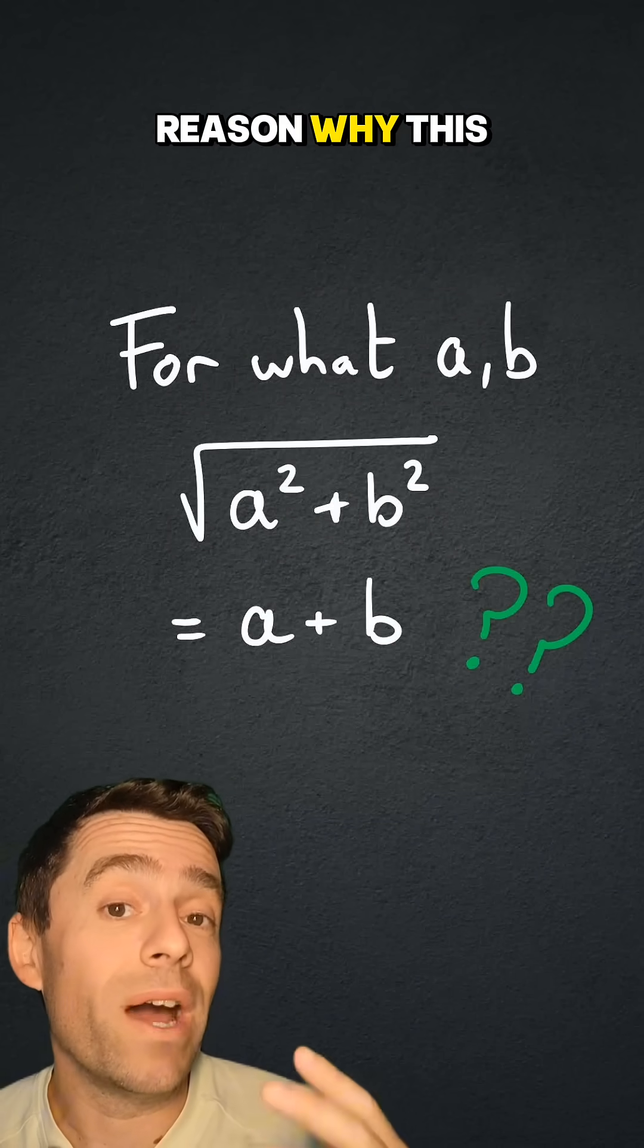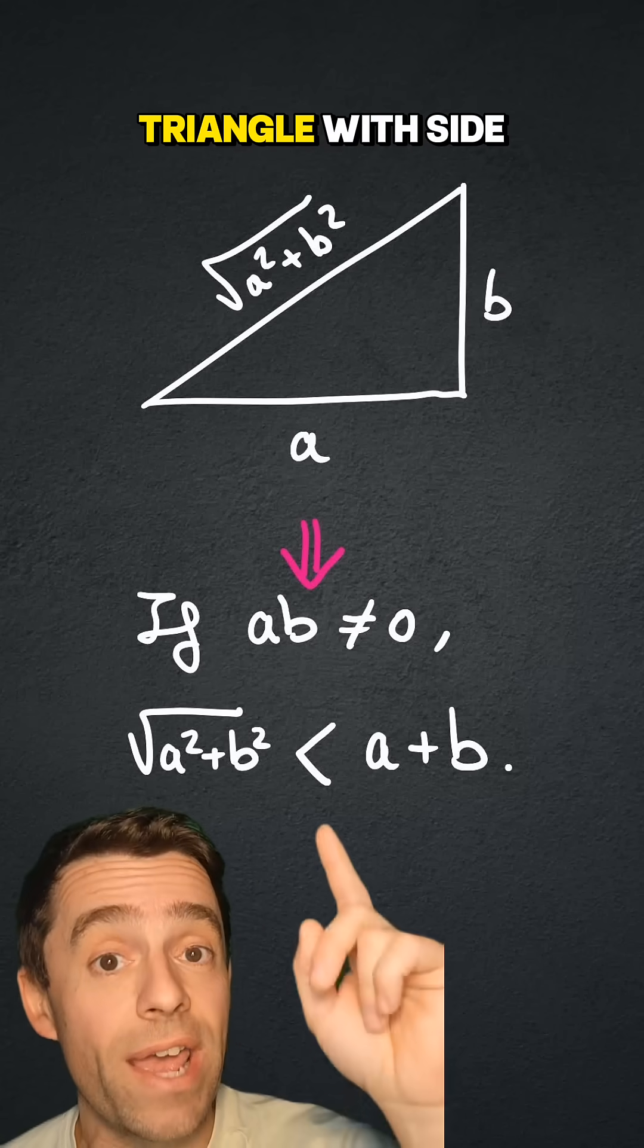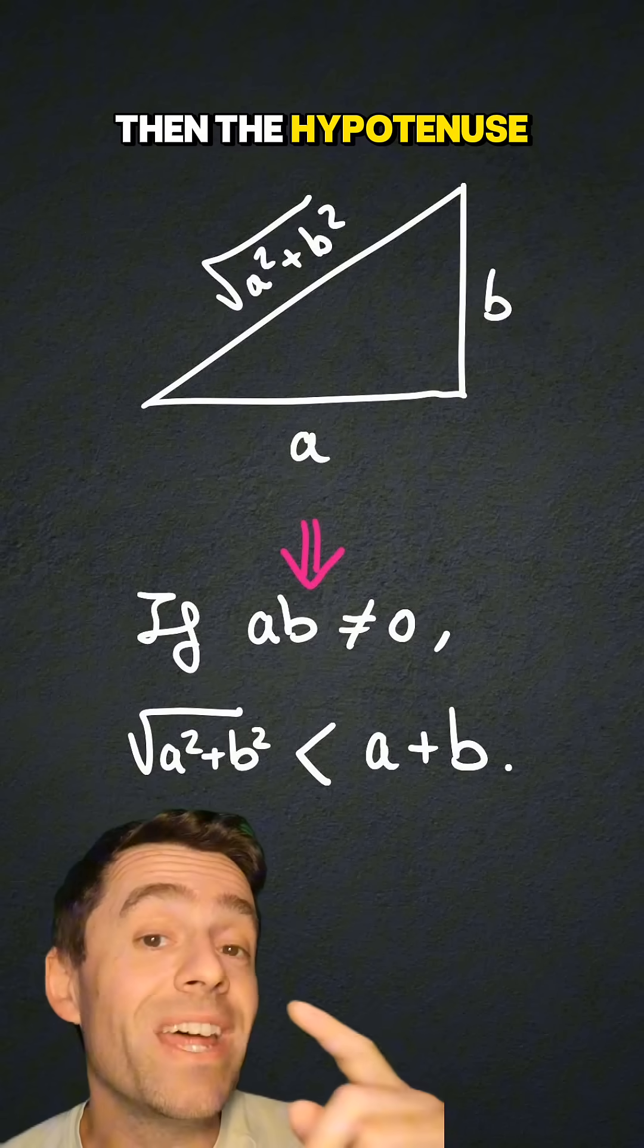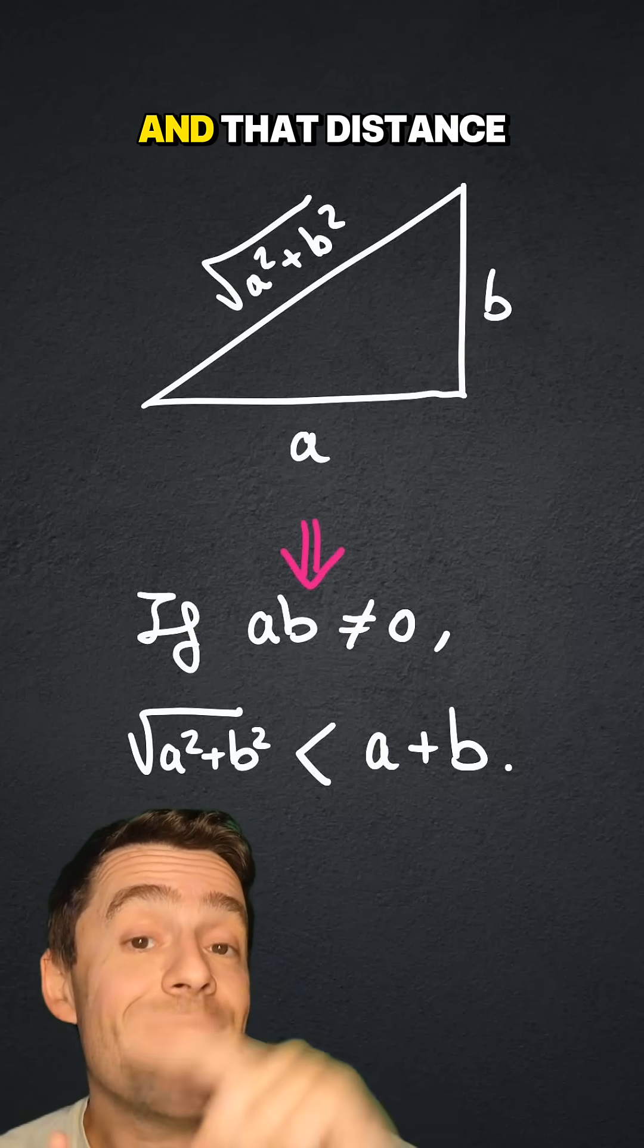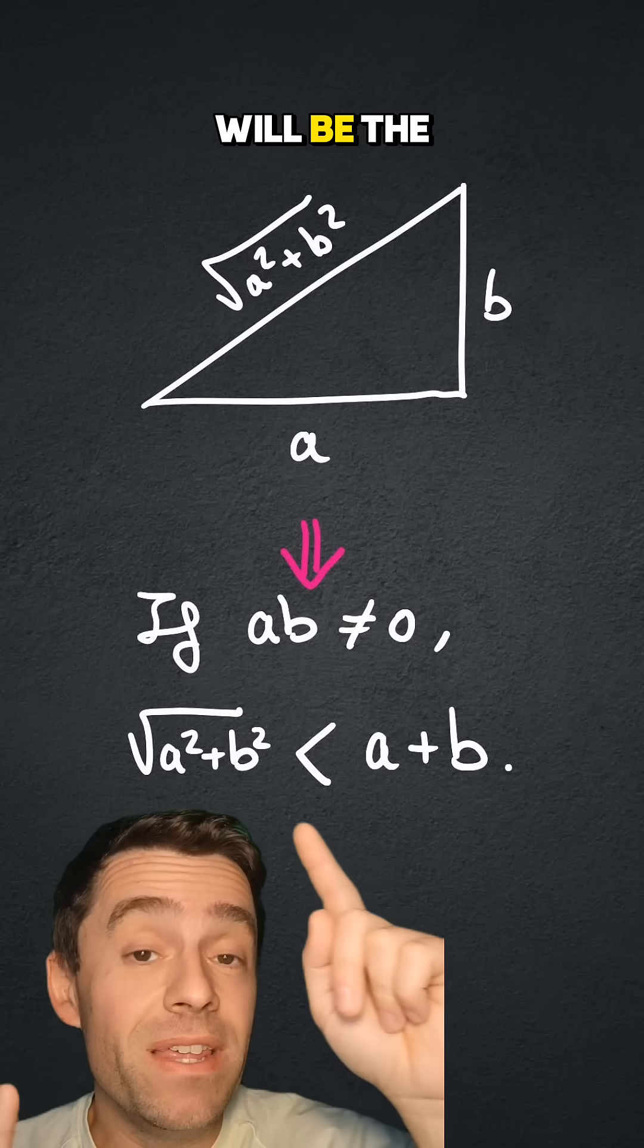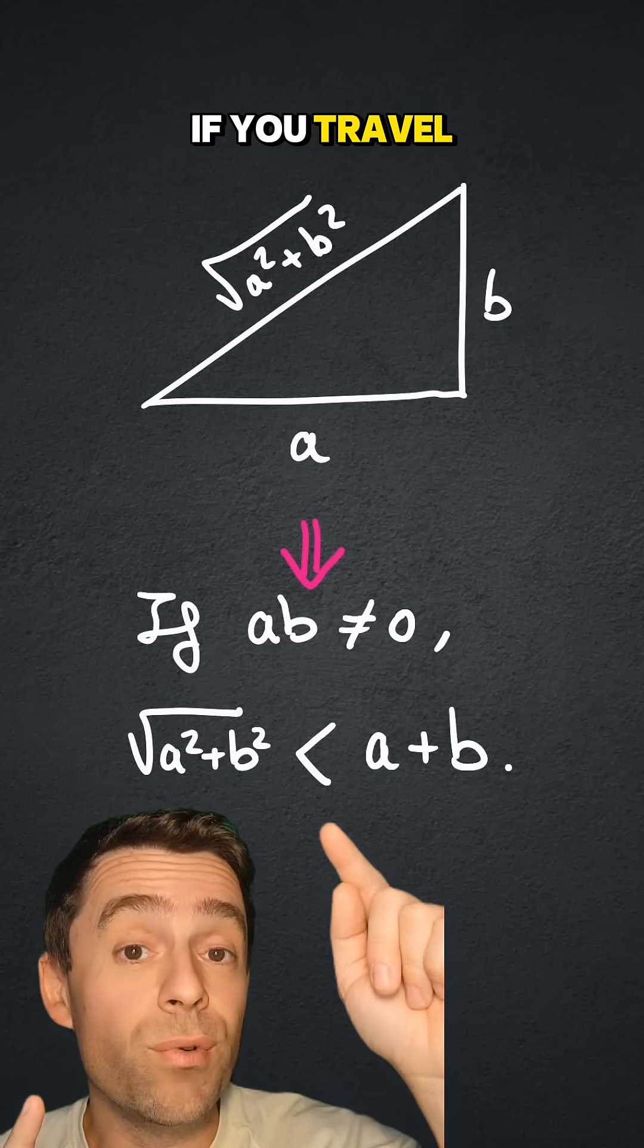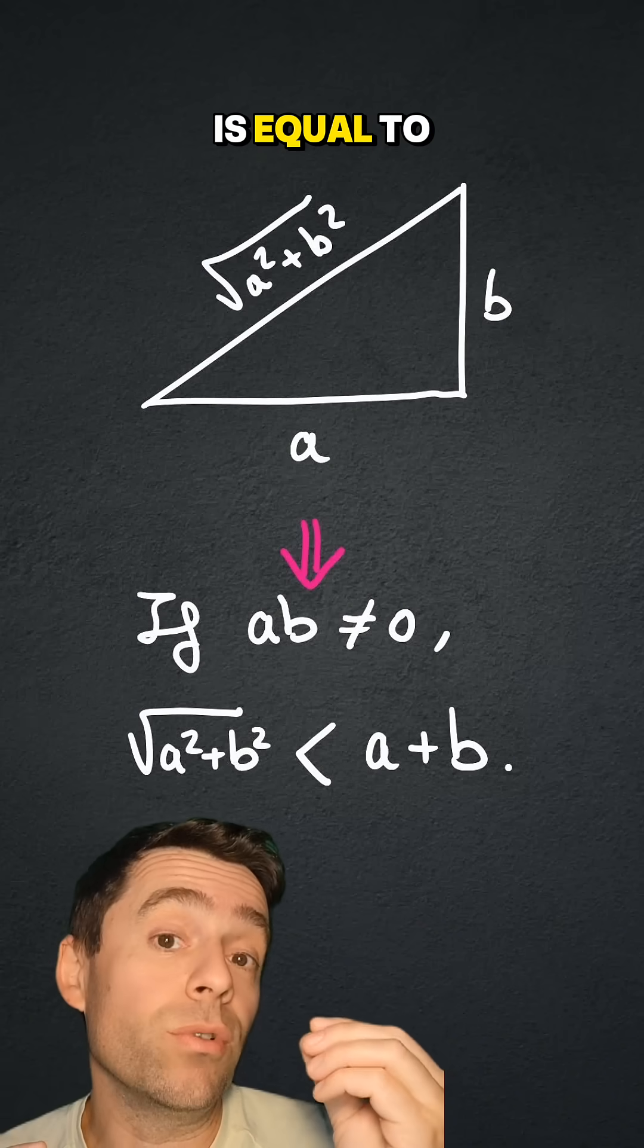There is an actual geometric reason why this doesn't work, and it comes from Pythagoras theorem, because if you have a right triangle with side lengths a and b, then the hypotenuse has length the square root of a squared plus b squared, and that distance will be the same as the long distance if you travel through the sides, if and only if one of those two sides is equal to 0.